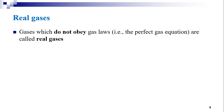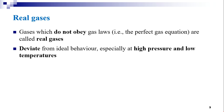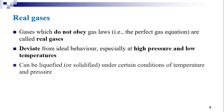The ideal gas equation is not valid for gases like oxygen, hydrogen, nitrogen, carbon dioxide, etc., and is valid only in restricted conditions. Real gases — those found in nature — can deviate from ideal behavior, especially at high pressure and low temperatures. The real gases can be liquefied or solidified under certain conditions of temperature and pressure, which is a large deviation from the ideal gas equation.